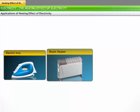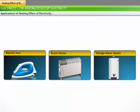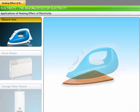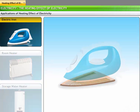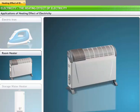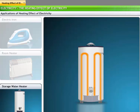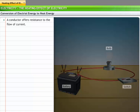Many appliances in our household utilize the heating effect of electricity. Some common examples are electric irons, room heaters, and storage water heaters. How does the electrical energy of current get converted into heat energy?